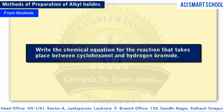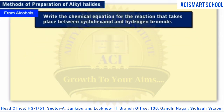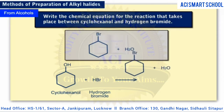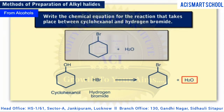Here's the first problem: write the chemical equation for the reaction that takes place between cyclohexanol and hydrogen bromide. Start by drawing out the structural formulae for the reactants. Then substitute the hydroxyl group with the bromine atom to make bromocyclohexane. Water is the other product of the reaction.